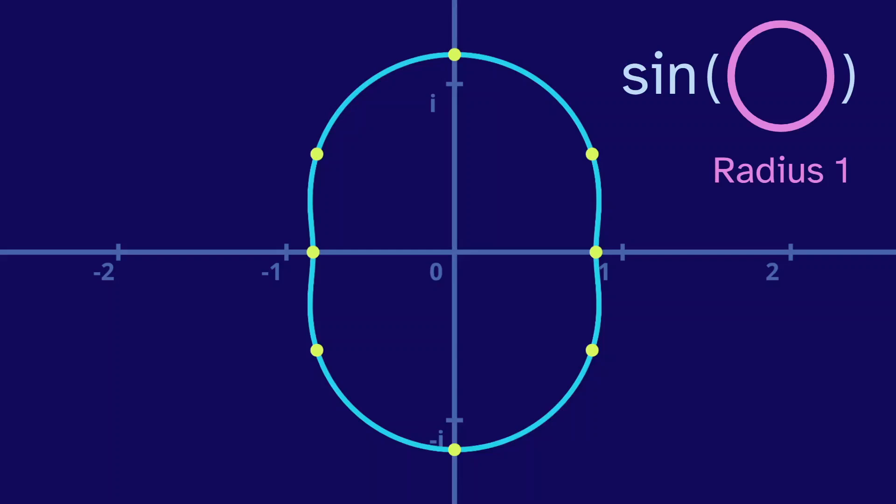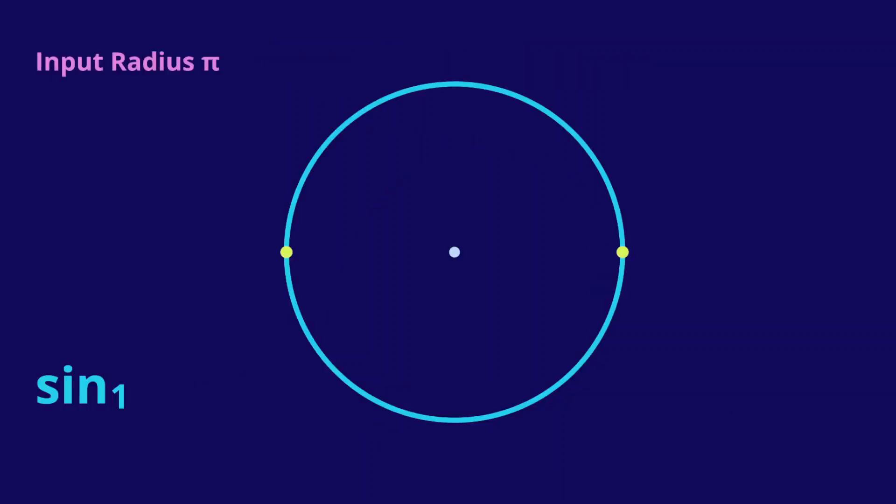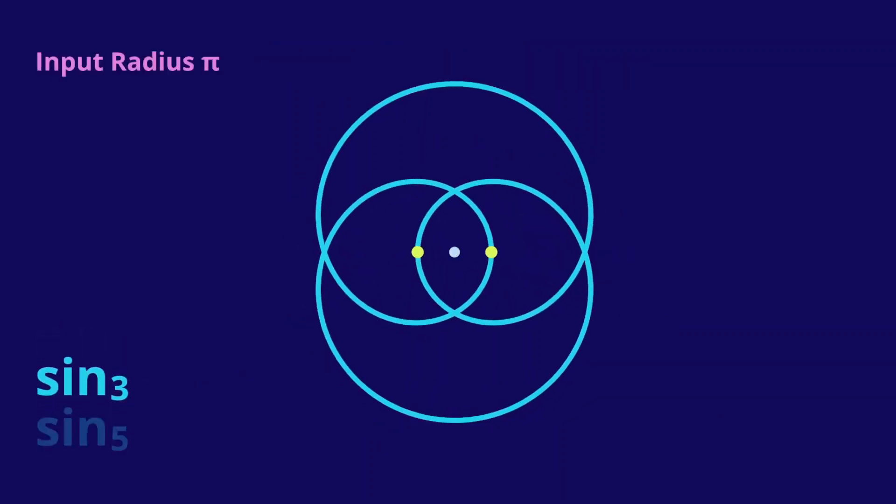Let's change the radius to pi. Now the input circle includes pi and negative pi, and both have a sine of 0. In the animation, we see them approaching 0.